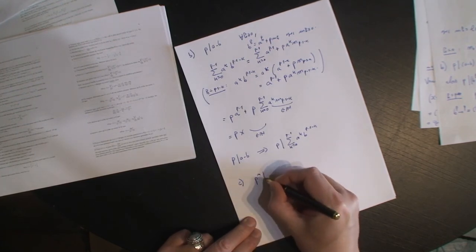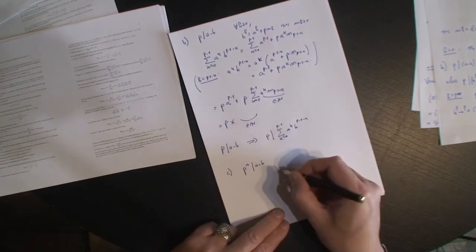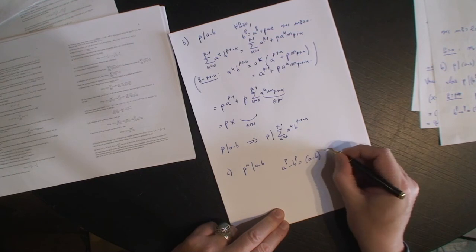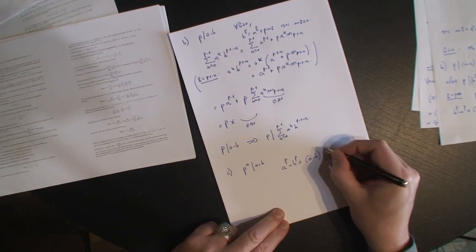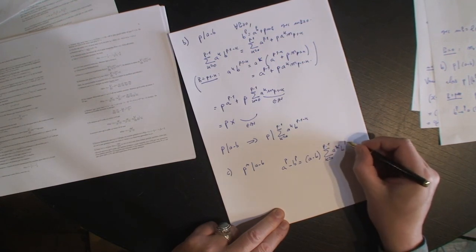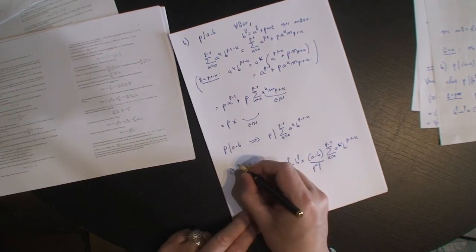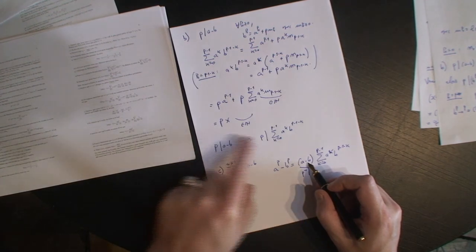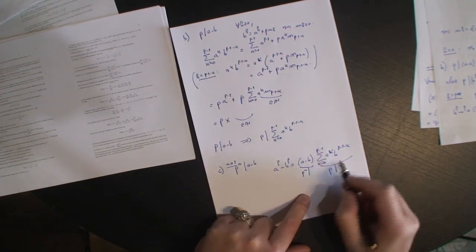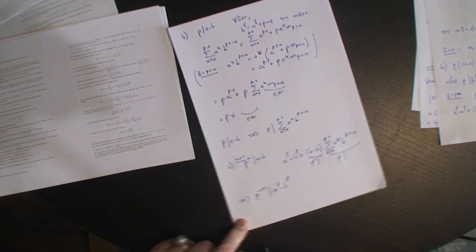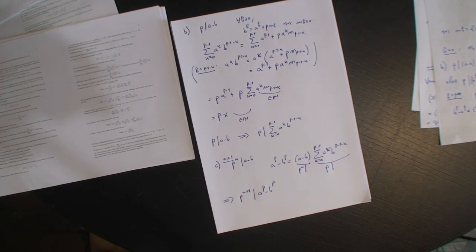Donc vous venez de montrer que si P divise A moins B, alors P divise la fameuse somme pour k égale 0 à P moins 1 de A^k B^(P-1-k). On peut conclure : supposons que P puissance N divise A moins B. Je sais que A^P moins B^P, c'est A moins B fois cette somme. Ça c'est divisible par P^N, et puisque P^N est supposé supérieur ou égal à 1, en particulier c'est divisible par P. Et à cause de ce qu'on vient de montrer, la somme aussi est divisible par P. Donc le produit est divisible par P^(N+1). Et donc vous avez montré que si P^N divise A moins B, alors P^(N+1) divise A^P moins B^P.